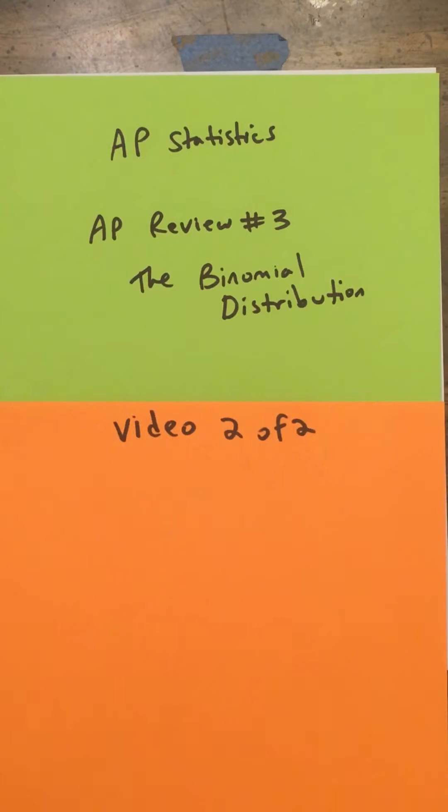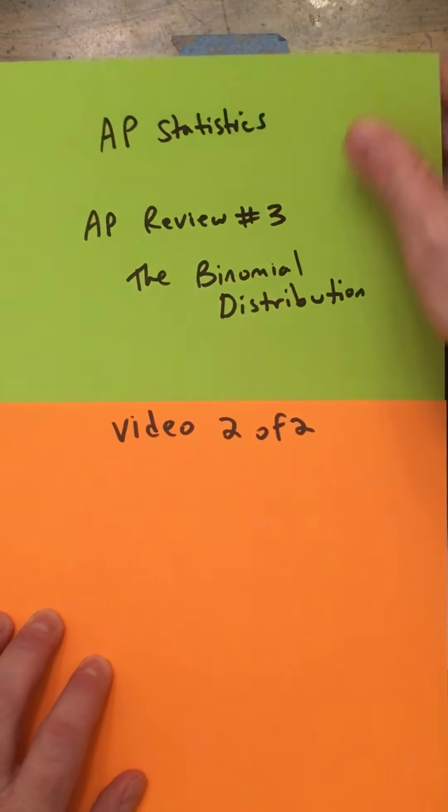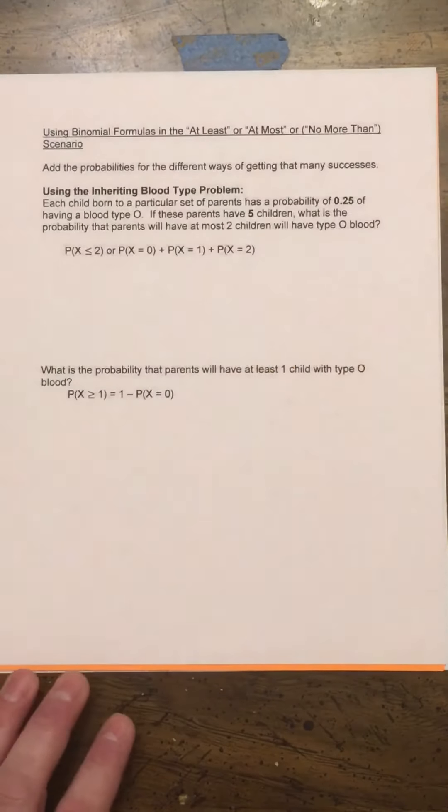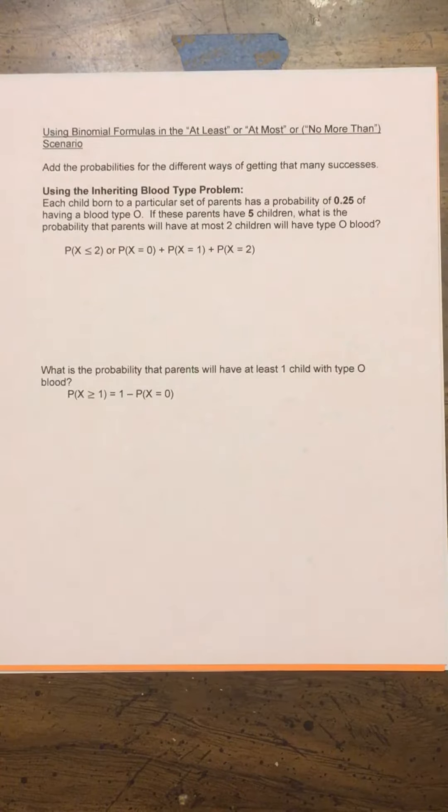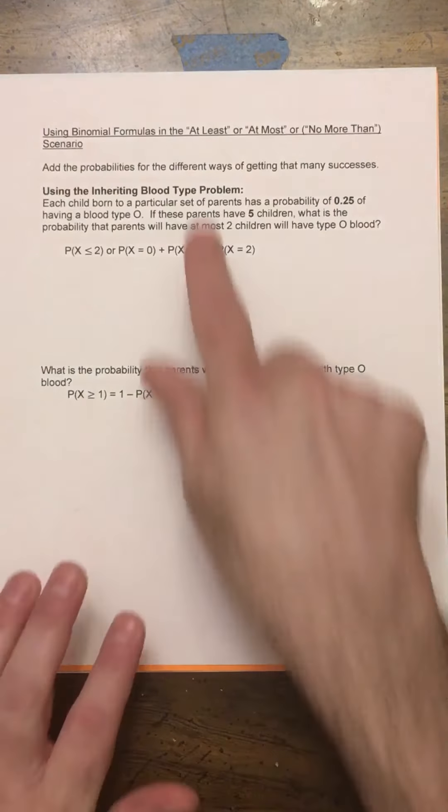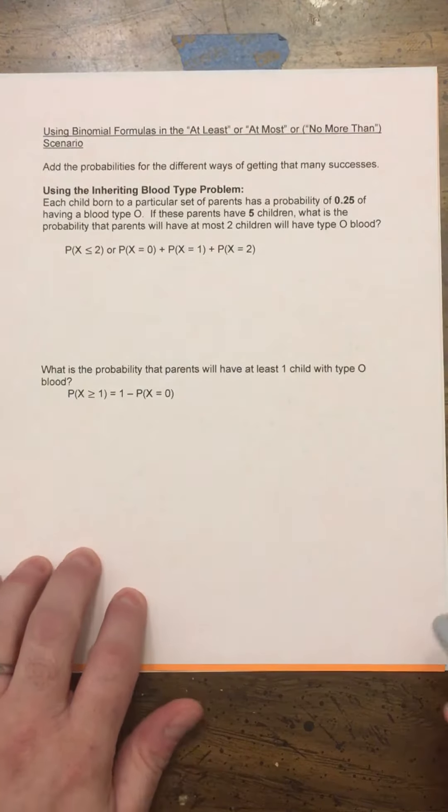Hi guys, this is Mr. Krieger. This is the second video of AP Review Number 3, the Binomial Distribution. We'll continue where we left off. Here we're going to look at the situation where we have at least or at most problems.